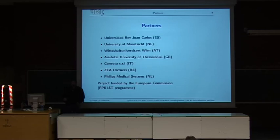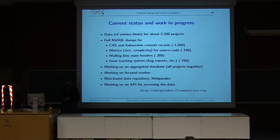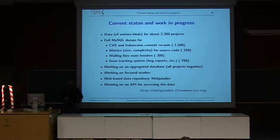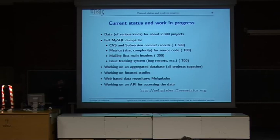We have a bunch of partners all around Europe, including universities and companies. Current status: our project is due to finish by August, so we are close to finishing. Right now we are more or less entering into production. At the end of the project, we expect to have around 5,000 projects analyzed, with the machinery continuing to grow after the project ends. Right now, you can find on the project website database dumps for something like 2,300 projects.